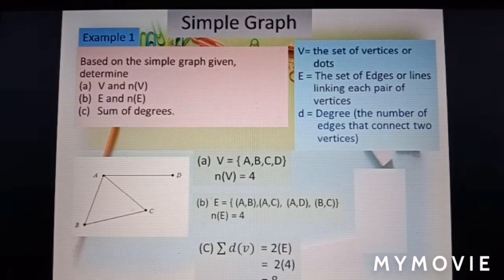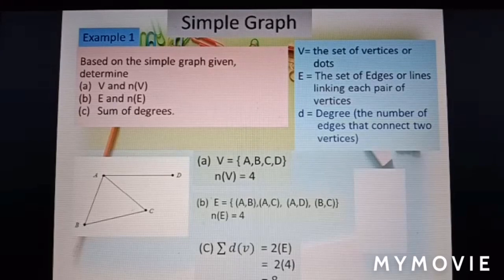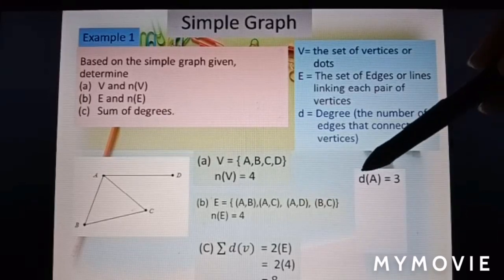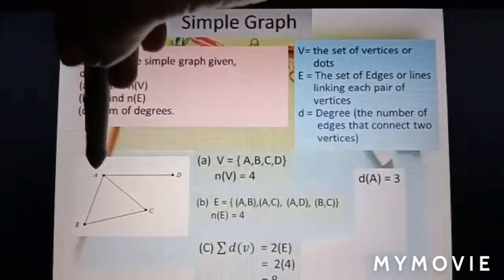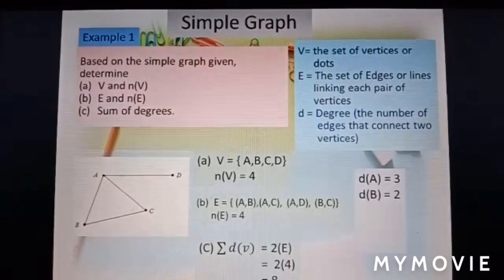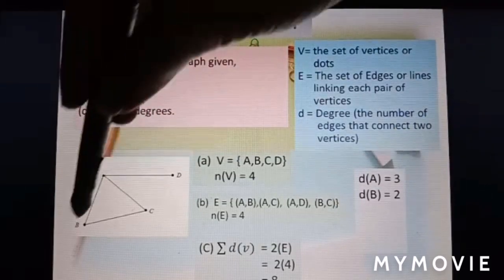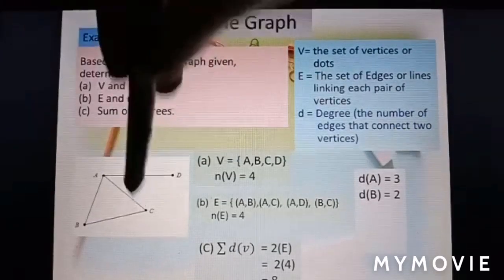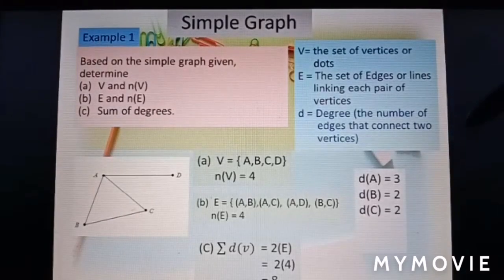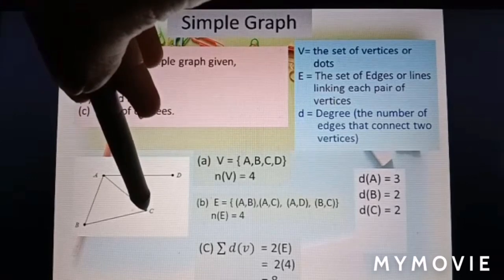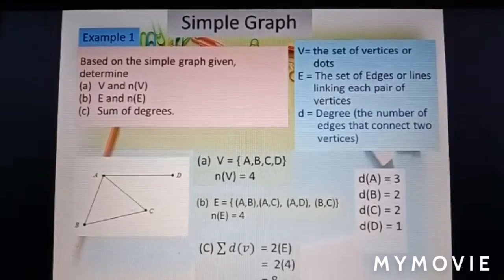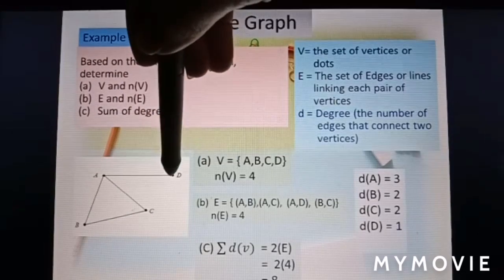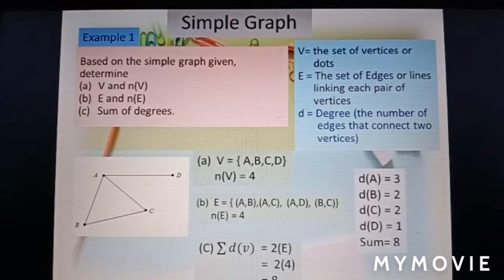To prove that sum of degree equal to twice of number of edges, let us see this. Degree for vertex A is 3: 1, 2, 3. Degree for vertex B is 2. From here, vertex B, 1, 2. Degree for vertex C is 2 also. Point C is here, vertex C, 1, 2. Degree of vertex D only 1. Because here, 1 only. So the sum of degree is 8.